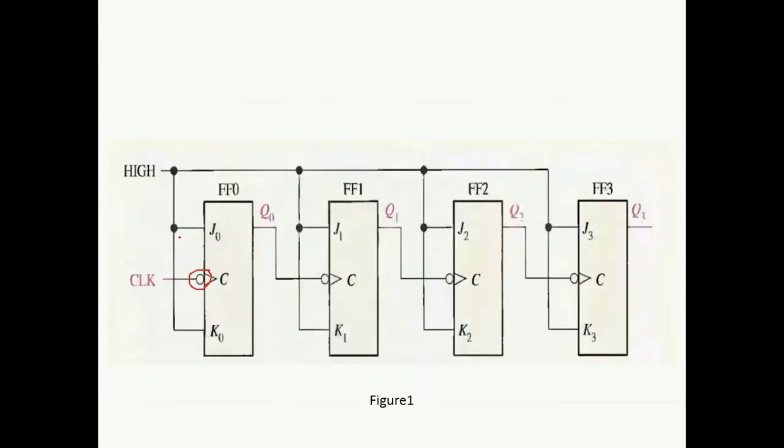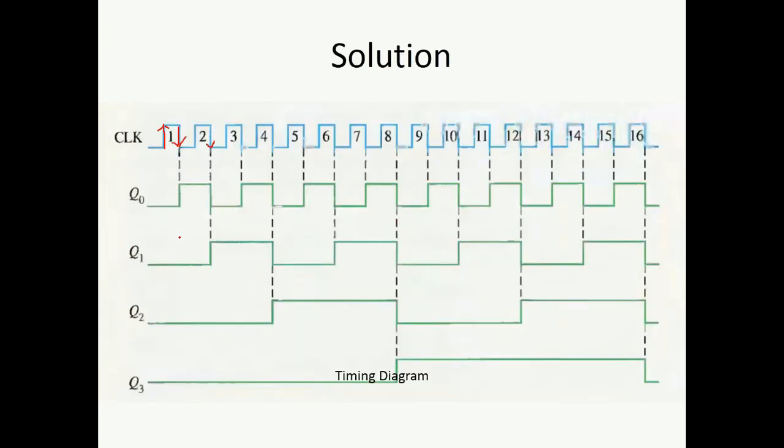As this is a 4-bit asynchronous counter, it will count from 0 to 15. You can see Q3, Q2, Q1, Q0. Q3 is our MSB and Q0 is our LSB. For the first clock cycle, when clock is 0, Q0, Q1, Q2, Q3 are all 0000.